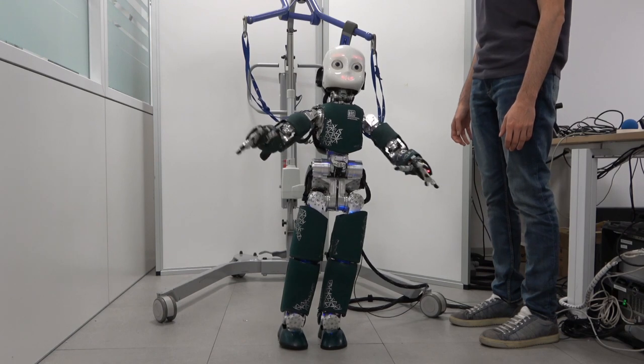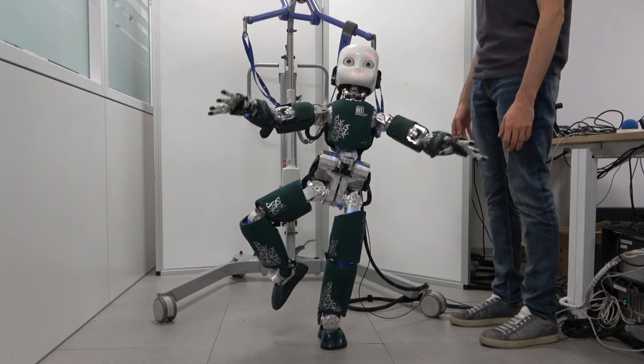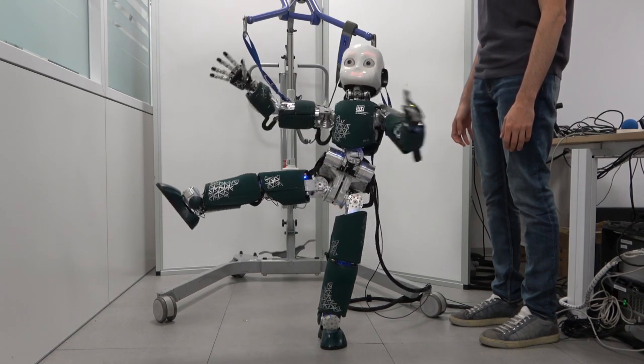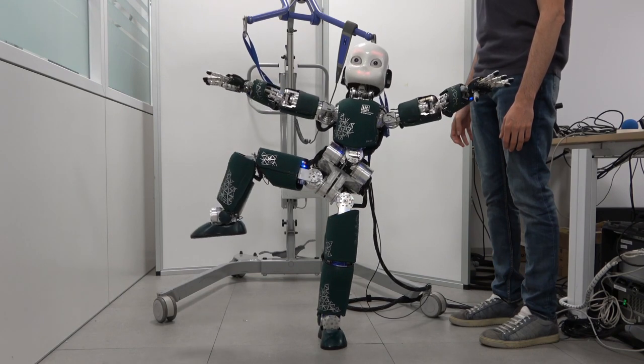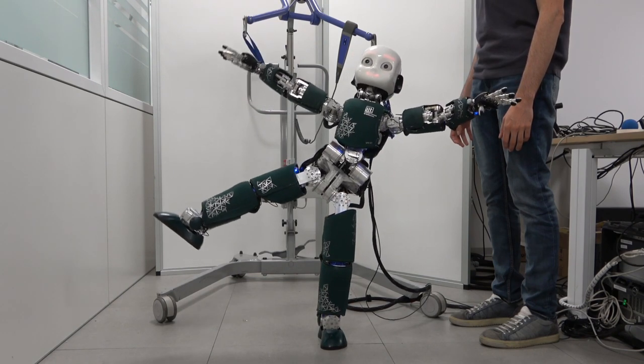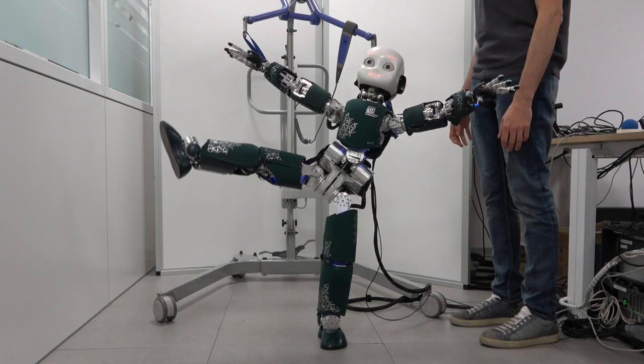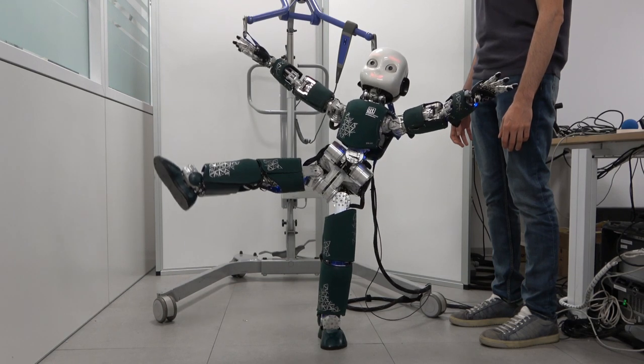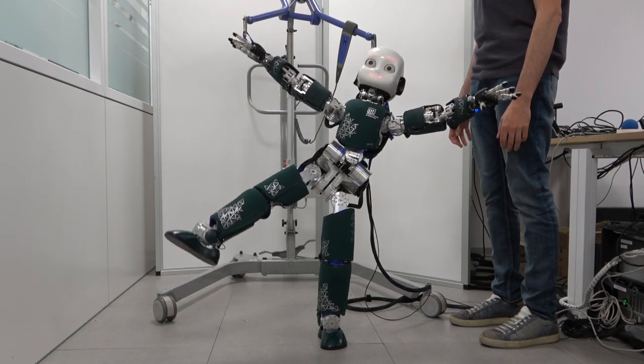In this second experiment, the robot performs highly dynamic movements while balancing. The robot can switch from two feet to one foot balancing and vice versa, thanks to a state machine that generates proper references according to the number of feet in contact.